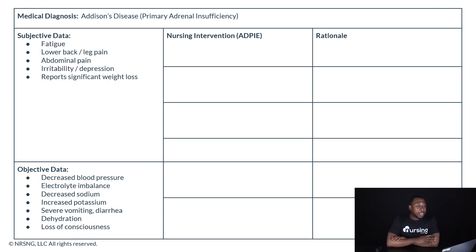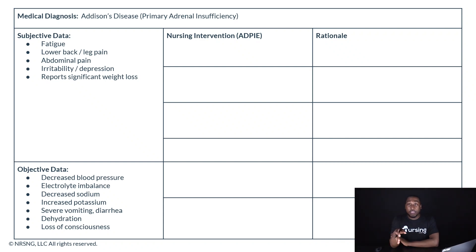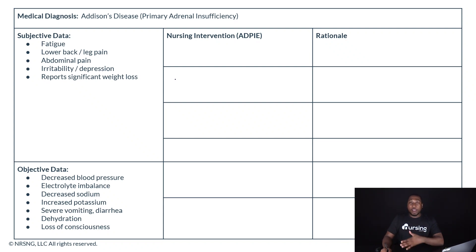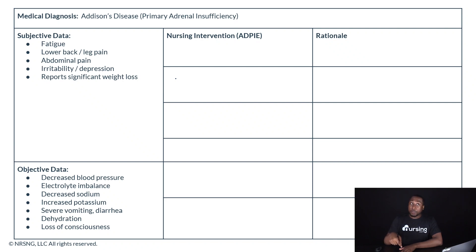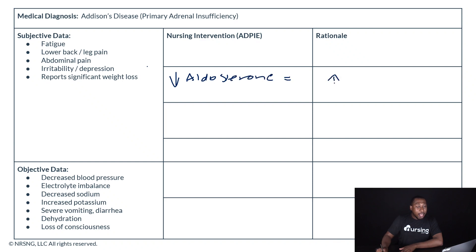When caring for these patients, the first thing we want to do is get them hooked up to an EKG and monitor for signs of high potassium — hyperkalemia. The reason is because they have low aldosterone levels. Aldosterone is a hormone that regulates sodium and potassium; it retains sodium and excretes potassium. So if aldosterone is low because of Addison's, that means potassium is high. Low aldosterone equals high K.